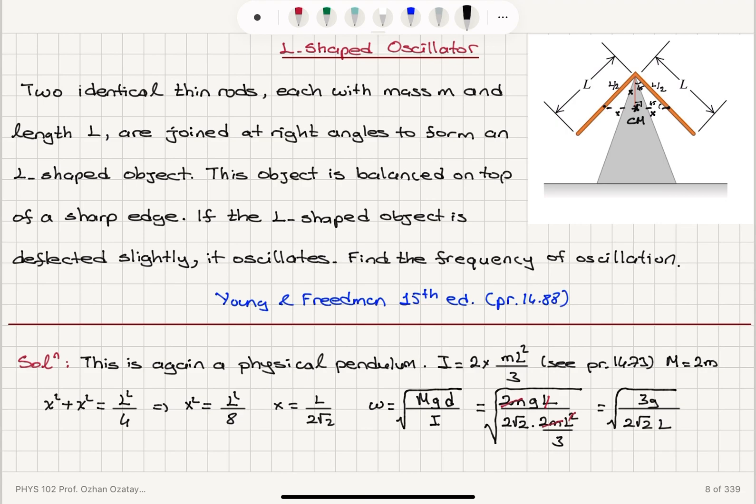And what I have to find is the frequency of the oscillation. Omega is 2 pi times frequency F. So I can read the frequency of the oscillation, small angle oscillation, as 1 over 2 pi, 3G divided by 2 square root 2 L, square root.